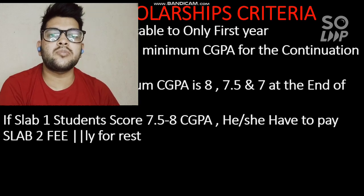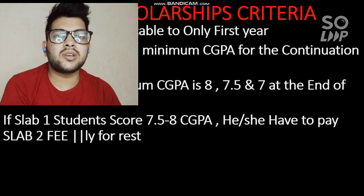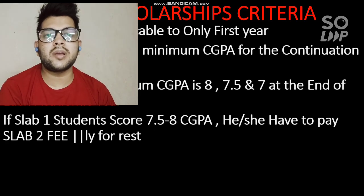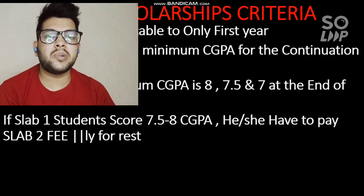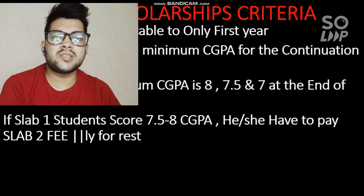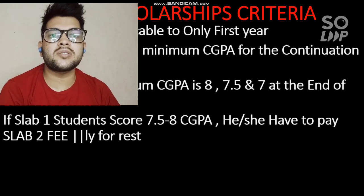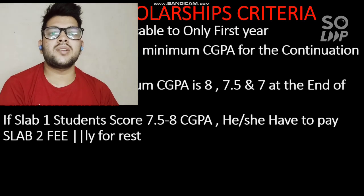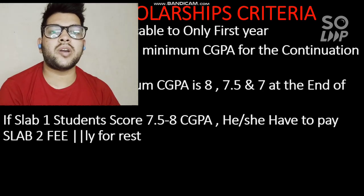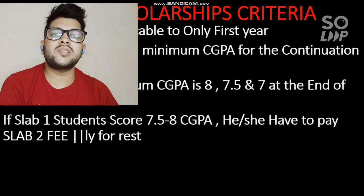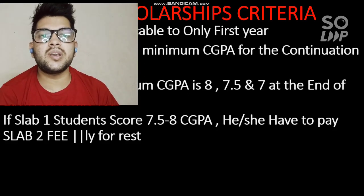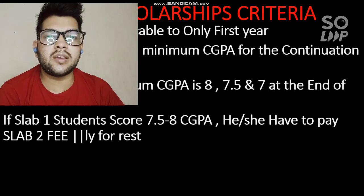For example, suppose in first year you had Slab 1 but your CGPA was between 7.5 and 8, so you have to pay the Slab 2 fee in second year. Even if in second year you score 8 or above, you still have to pay Slab 2 fee only — you cannot get back the Slab 1 fee criteria. This is very important information you should know.